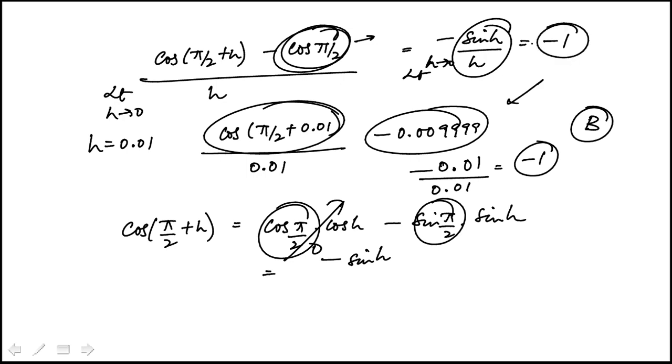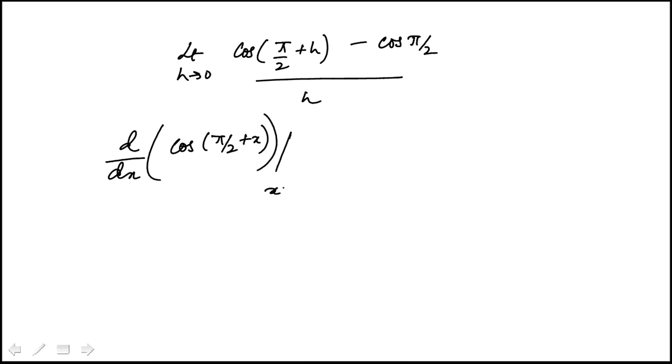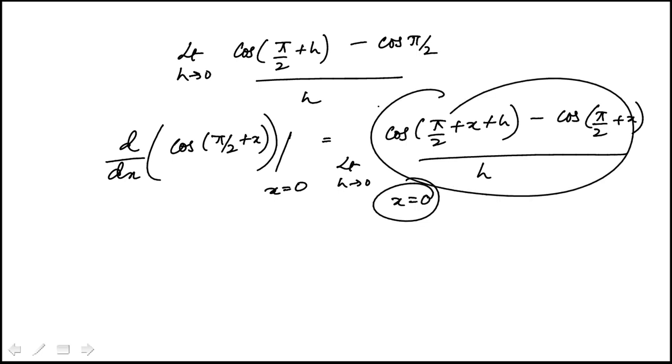The other thing you can also do is to recognize that this limit form is the differentiation of this function, cosine π/2 plus x, if you evaluate it at x equal to 0. Because if you were to write this in limit form, this would be cosine (π/2 + x + h) minus cosine (π/2 + x) divided by h. And you'll see that if I replace x with 0, this becomes the same as this guy.